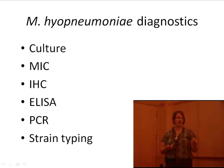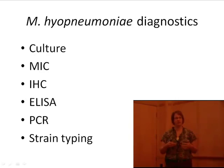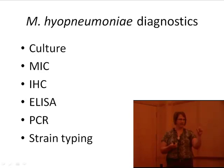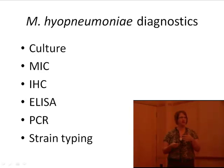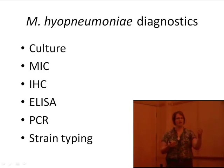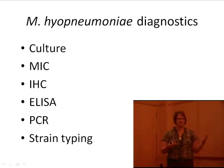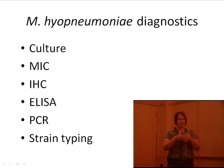We don't have western blots or other confirmatory tools like some ELISAs have. My lab, with Chris Minion at Iowa State, is working on improving the assay, but it's not coming next week. The DACO ELISA is directed to one protein — an internally expressed protein — so it's not necessarily correlated to protection. Antibodies may not always be made to that protein in every infected pig, making it prone to false negatives.